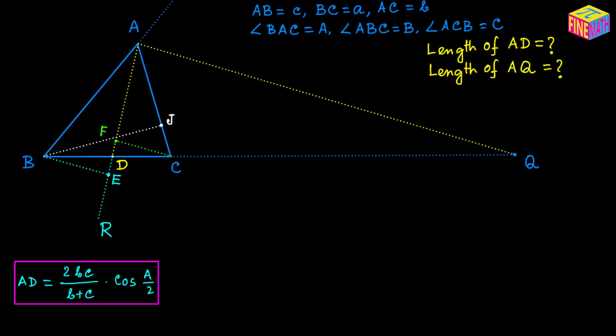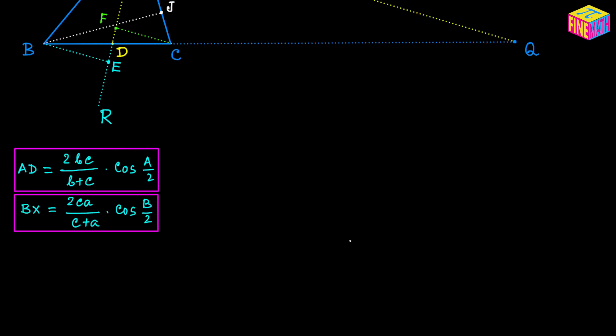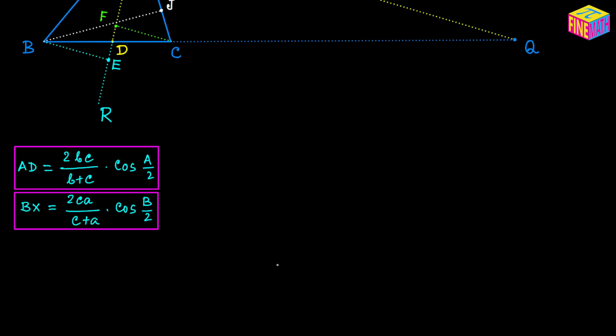Using a similar technique, if we draw the bisector of angle B — call it Bx — its length is 2·CA/(C + A) · cos(B/2). Similarly, if CY is the bisector of angle C, then CY = 2·AB/(A + B) · cos(C/2).